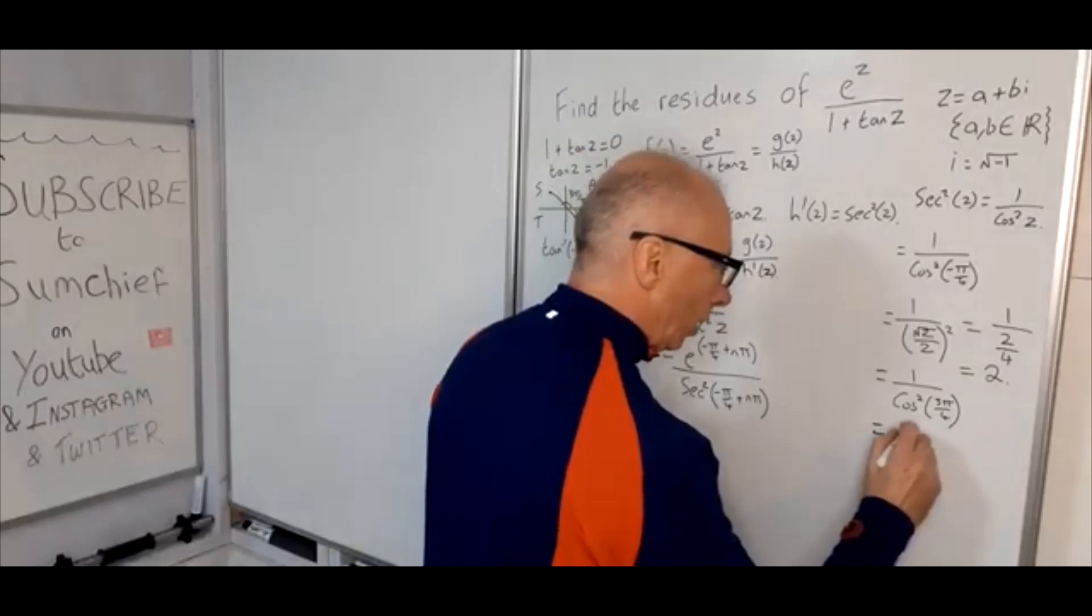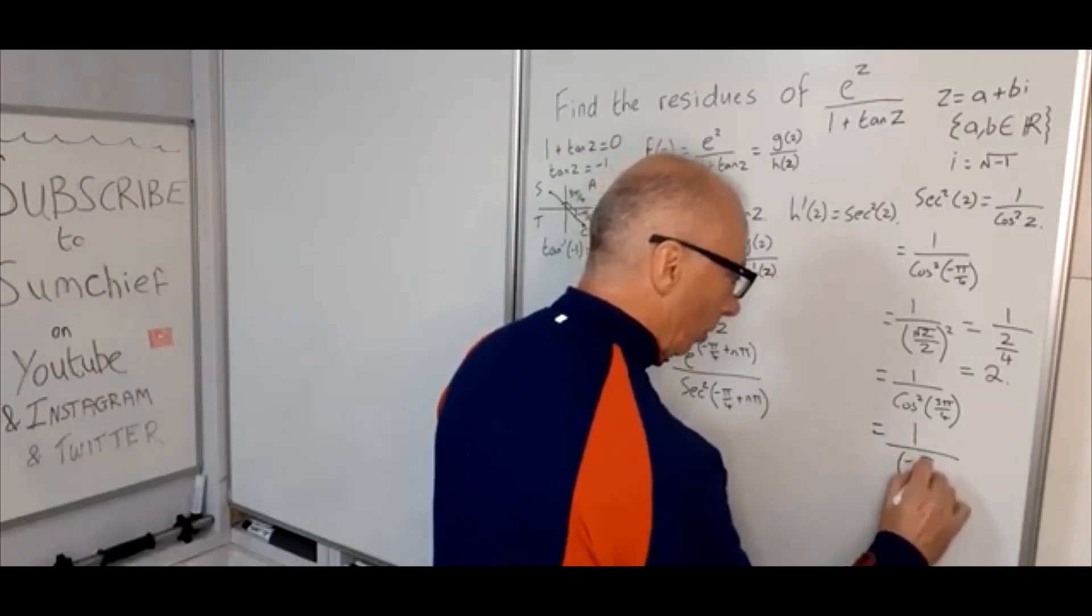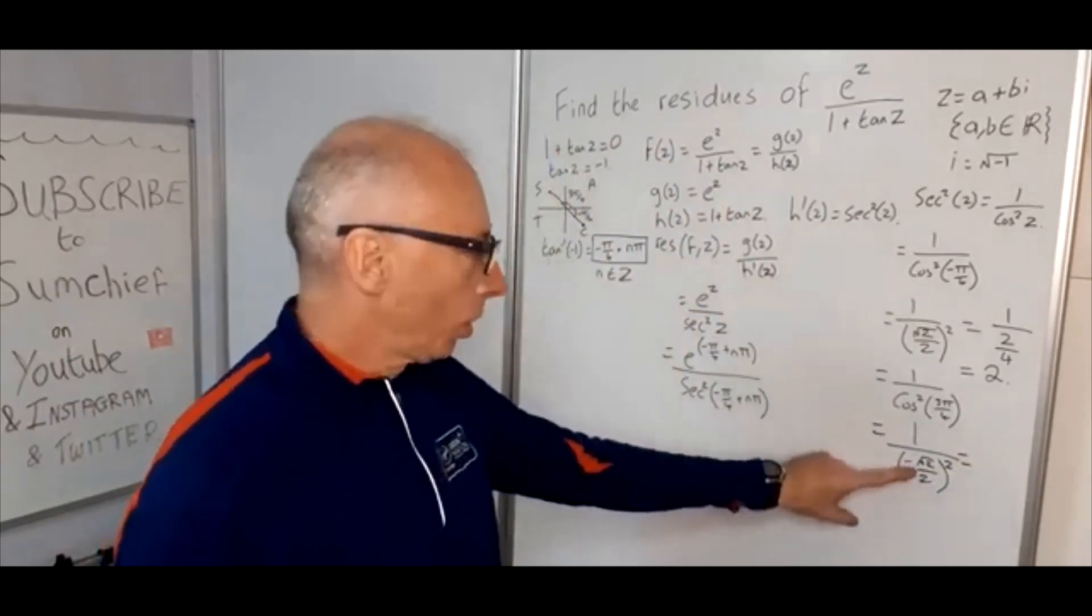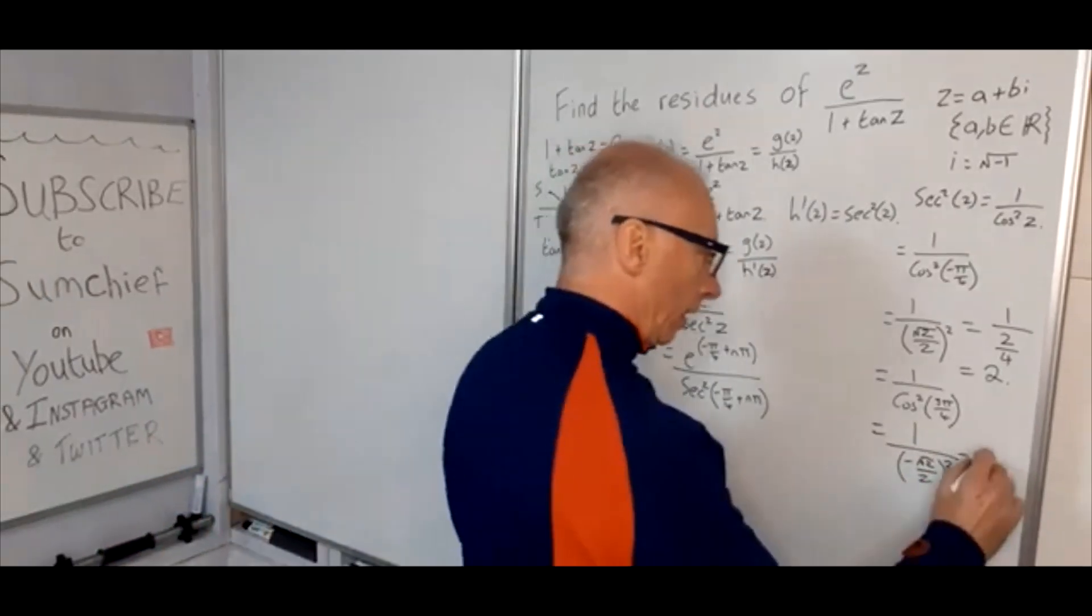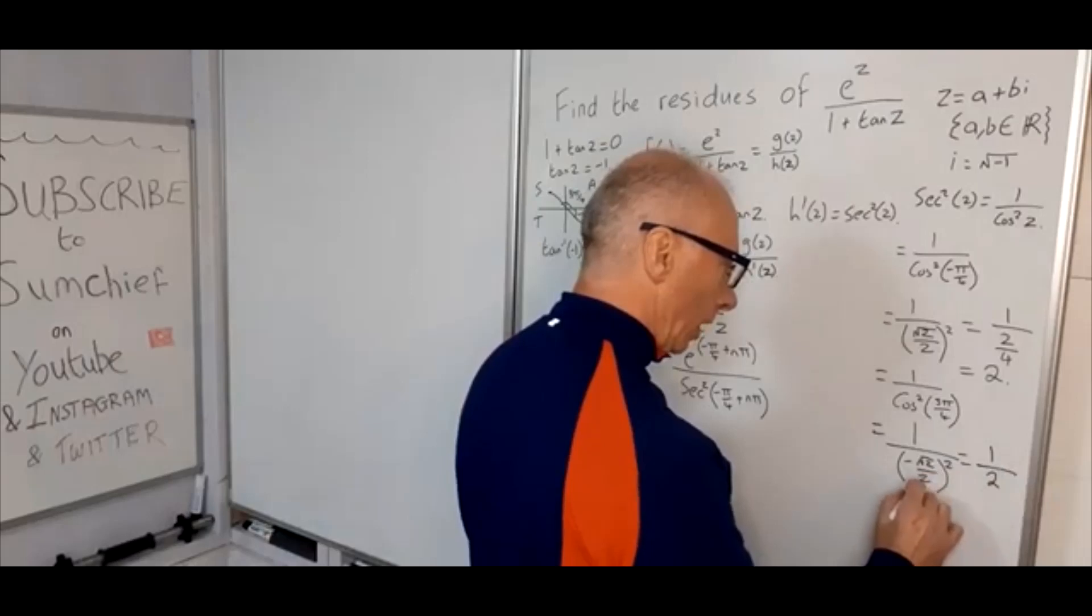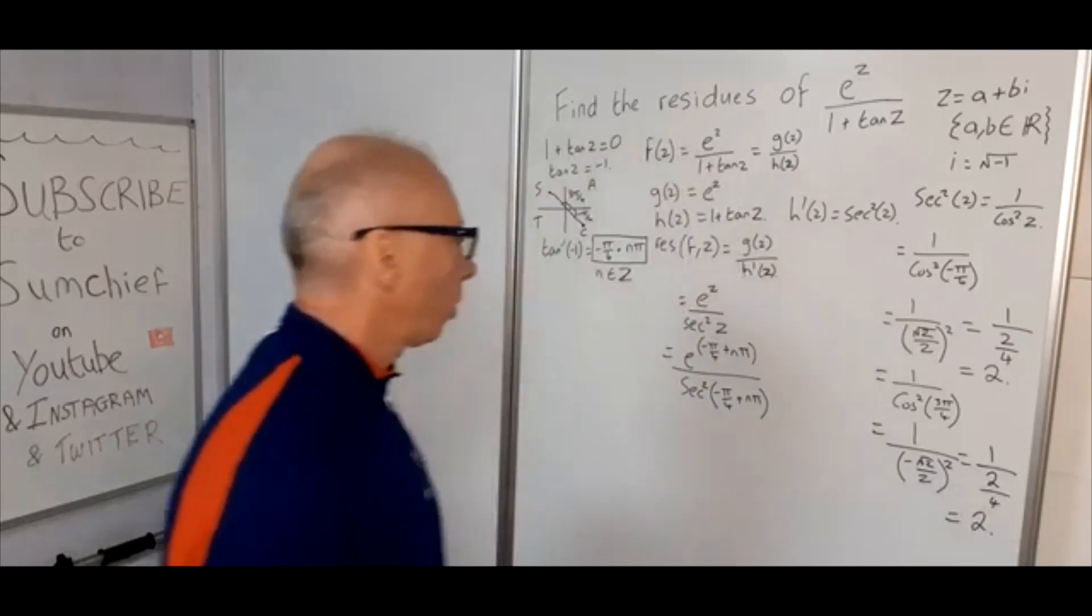So we want 1 over (-√2 over 2)². So (-√2)²—that's going to yield us just again positive 2. And 2 squared is 4. So again, this one equals 2.